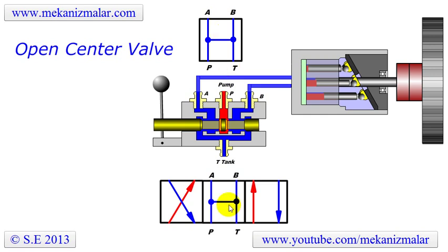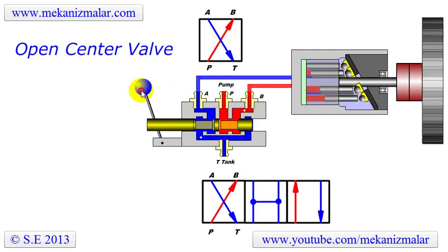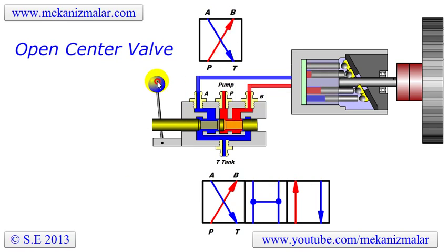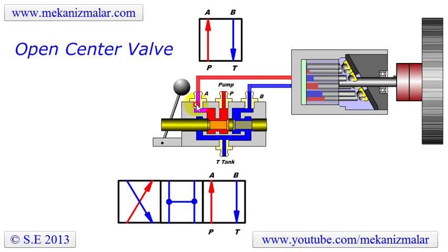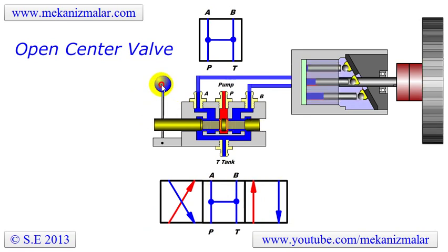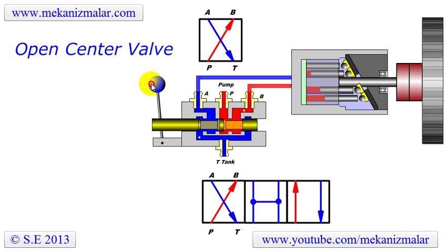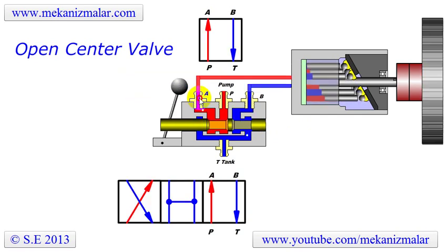The corresponding flow diagram representing the center position of the spool is shown at the top. The bottom diagram shows three square blocks which represent each position of the valve and how they are combined to create the flow diagram of the valve. This valve is commonly used for motors because it handles system overloads or shocks to the system, and for this reason it is sometimes called the motor valve.